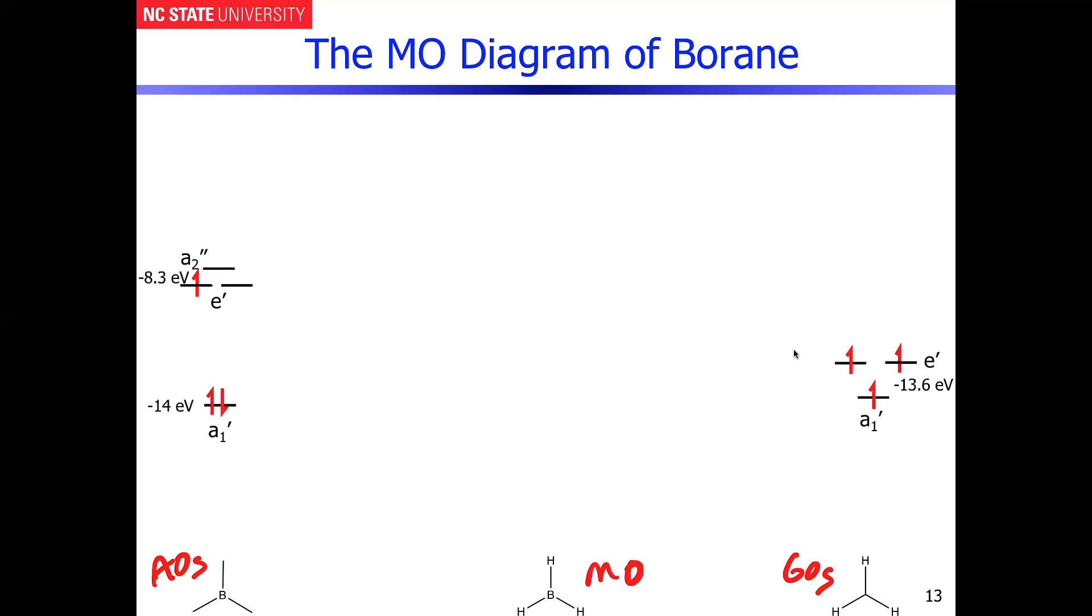Let's start energetically. The hydrogen group orbitals are going to have the same energies as the atomic orbitals on hydrogen. Those orbitals are here, and they all have minus 13.6 eV of energy. I separated them simply because the A1 prime is totally symmetric and E prime has a node. I separated them in energy a little bit, but it makes the diagram less congested.